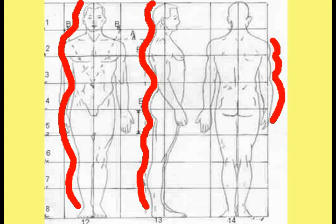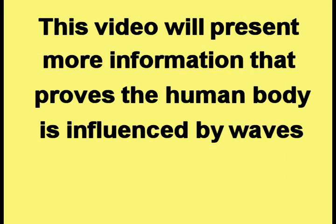The arms, legs, and torso of the human body all have a wave shape to them, as shown by the red lines. This video will present more information that proves the human body is influenced by waves.